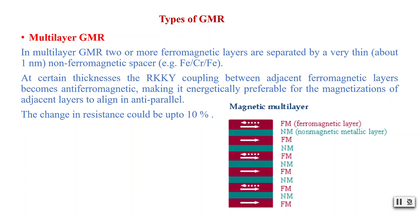We have four types of GMR. Starting with multi-layer GMR: in multi-layer GMR we use two or more ferromagnetic layers which are separated by a very thin — about one nanometer — non-ferromagnetic spacer. For example, we may use iron (Fe), rhodium, and iron (Fe) — ferromagnetic layer, then non-magnetic metallic layer, and so on.